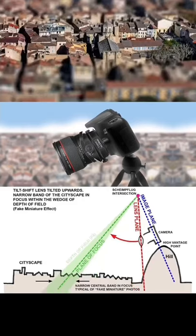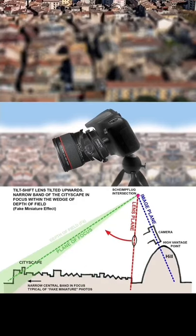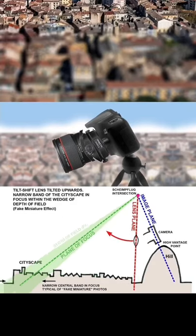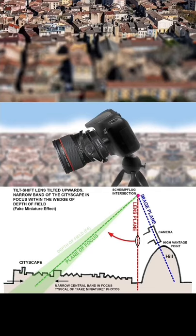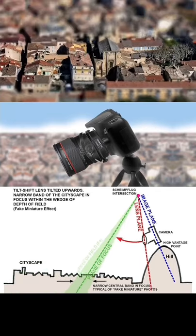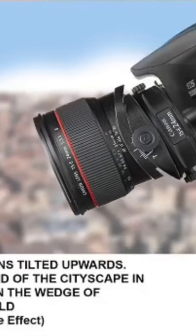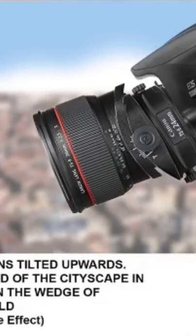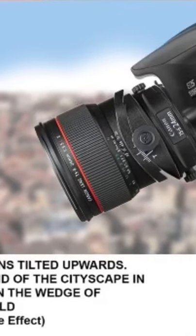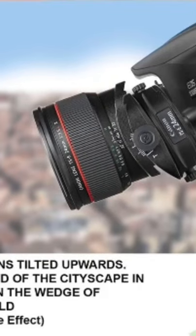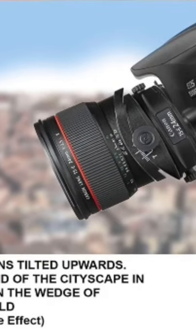As you tilt the lens further upwards, the plane of focus moves away from the camera, showing a narrow slot of focus in the scene. Only tilting the lens upwards achieves this fake miniature narrow band of horizontal focus.